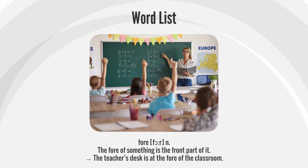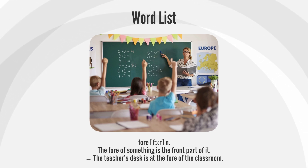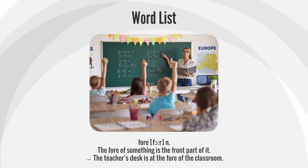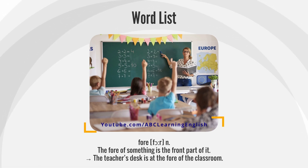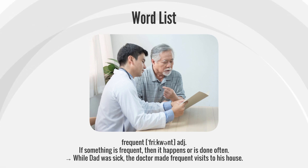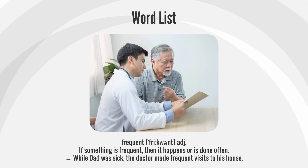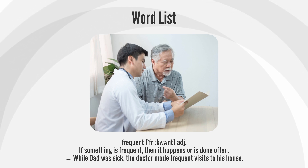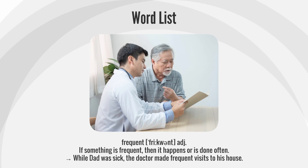Fore — the fore of something is the front part of it. The teacher's desk is at the fore of the classroom. Frequent — if something is frequent, then it happens or is done often. While dad was sick, the doctor made frequent visits to his house.